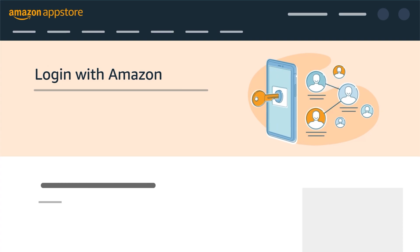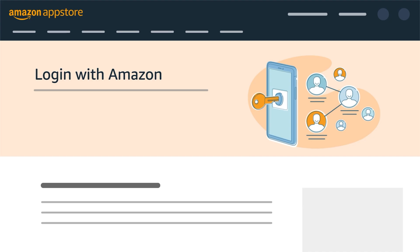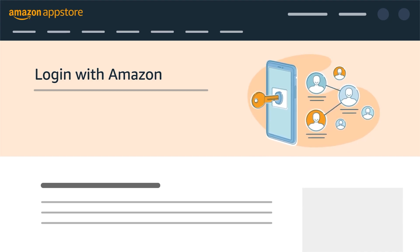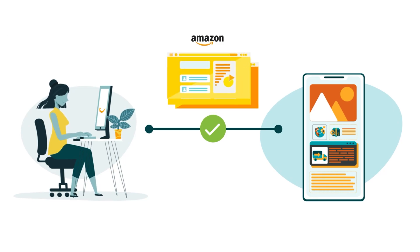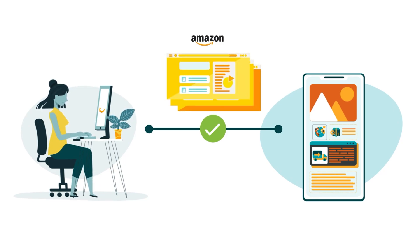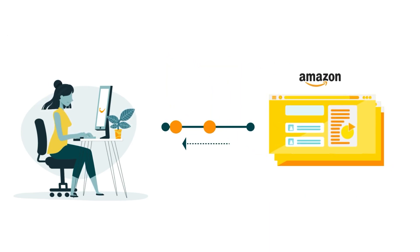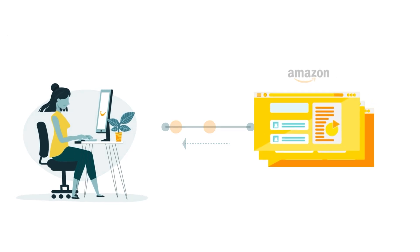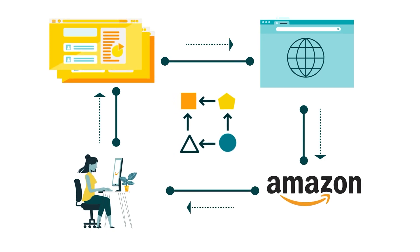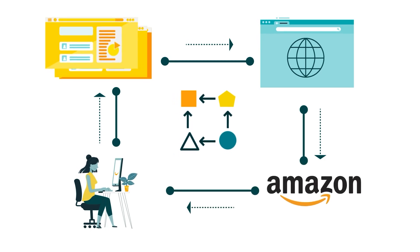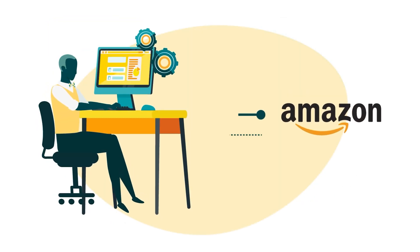SP API's authorization model is based on Login with Amazon, or LWA — Amazon's implementation of OAuth 2.0. In this model, the Selling Partner authorizes your application by interacting with pages displayed by Amazon and your website. Actions taken by the Selling Partner trigger responses from your website or Amazon, and the Selling Partner's browser is the user agent that passes parameters between your website and Amazon at each Selling Partner action.